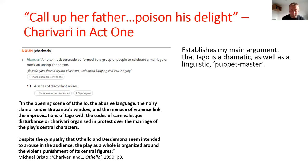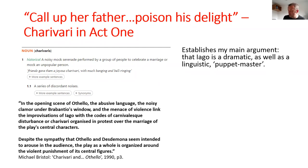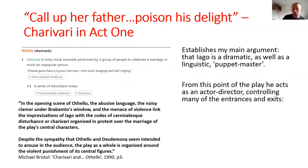This establishes my main argument for the second half of the talk: Iago is a dramatic as well as a linguistic puppet master. We always think about him controlling characters through words — 'Honest Iago,' 'O, you are well tuned now!' — but I would argue he does something very similar dramatically. From this point of the play, he almost acts as an actor-director, controlling many of the entrances and exits.